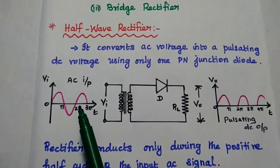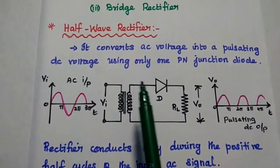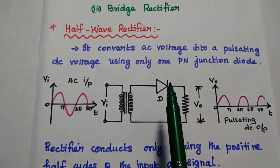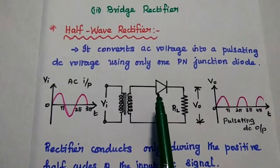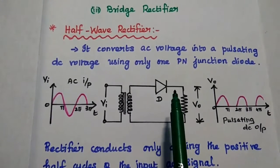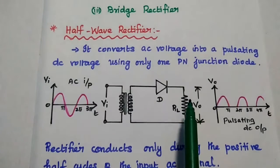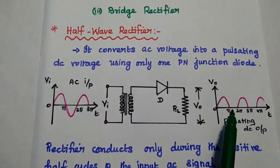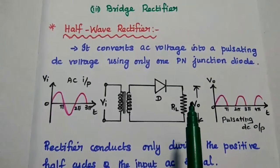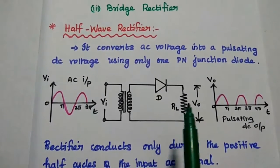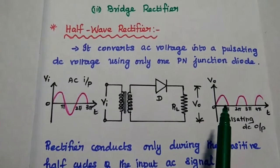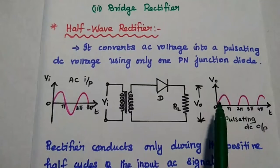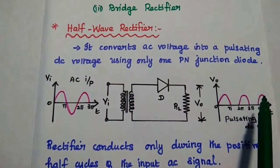During the negative half cycle, the input is negative while the other terminal is positive, so the diode is reverse biased. That means it does not conduct, and there is no output across the load resistor. We cannot get any output during the negative half cycle. It suppresses the negative half cycles and allows only the positive half cycles, giving us a pulsating DC output.